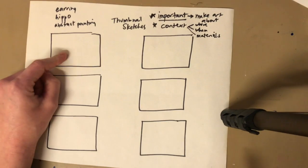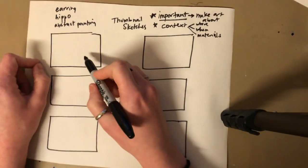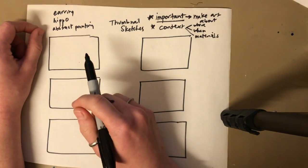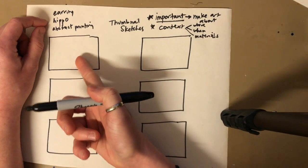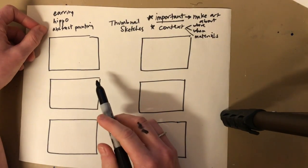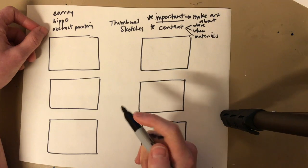Okay, so now when I am planning my thumbnails this is really quick drawing. These should be easy to do and it's not always gonna be your first one that comes out the best. So I'm gonna take the earring, the hippo, and the abstract painting and I'm gonna think about how I can make some artwork out of that.